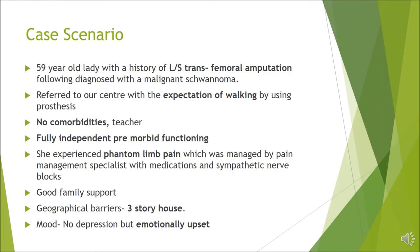I hope that has been helpful for understanding the basic concepts of amputee rehabilitation. Now let's apply these concepts to a patient referred to us with lower limb amputation. This is a 59-year-old lady with a left-sided transfemoral amputation due to malignant schwannoma. She was referred with the expectation of walking with a prosthesis. She was a teacher without comorbidities and was previously functioning well. She experienced phantom limb pain with excruciating pains that were very distracting.